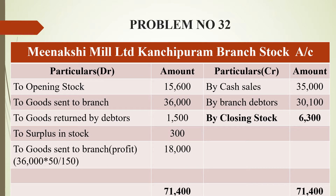The first entry is opening stock, that is Rs. 15,600. In the branch stock account, we calculate at invoice price. For goods sent to branch, the invoice price is Rs. 36,000. You can arrive at that by adding profit — that is 36,000 into 50 divided by 150, which equals 18,000.